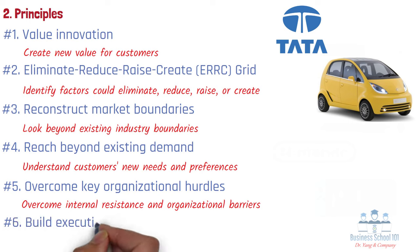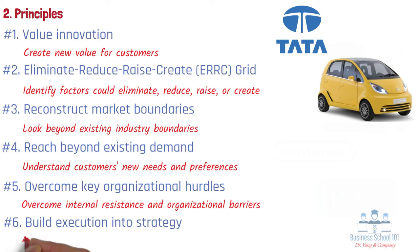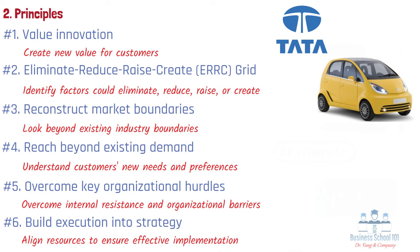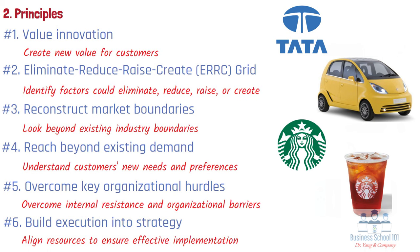Number 6: Build Execution Into Strategy. Successful execution is critical for realizing the potential of a Blue Ocean Strategy. Companies should align their resources, processes, and performance metrics with their strategic goals to ensure effective implementation. For example, Starbucks, the global coffeehouse chain, focused on creating a unique, consistent customer experience by investing in employee training, store design, and high-quality ingredients. By closely monitoring performance metrics such as customer satisfaction and store sales, Starbucks was able to continuously refine its strategy and maintain its competitive advantage in the coffee market.